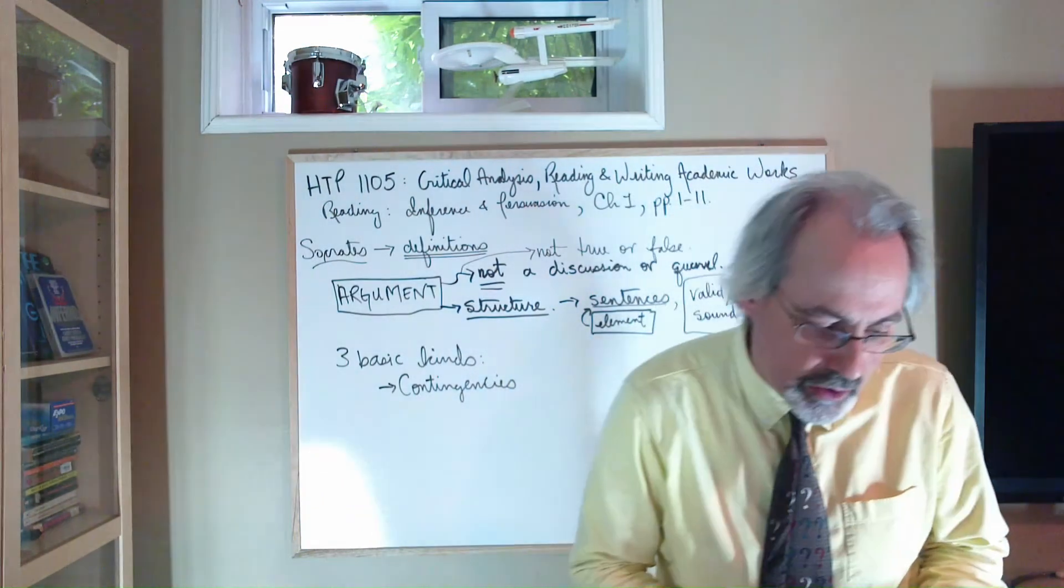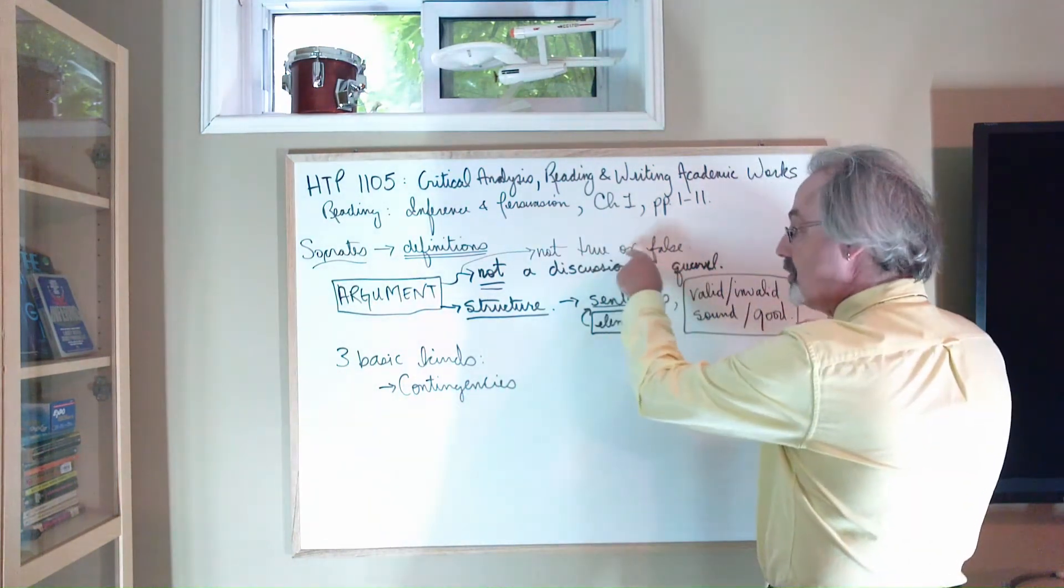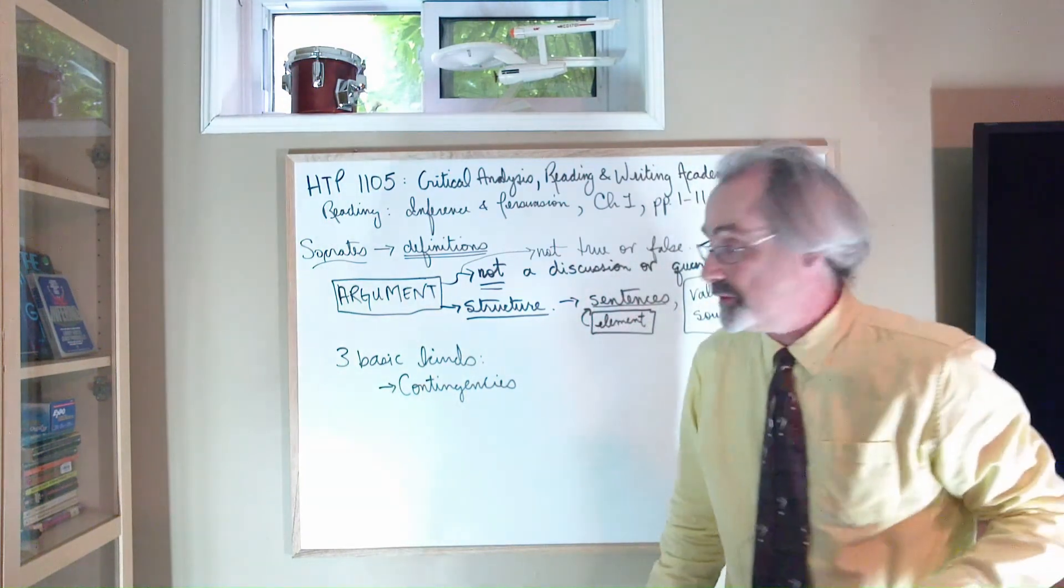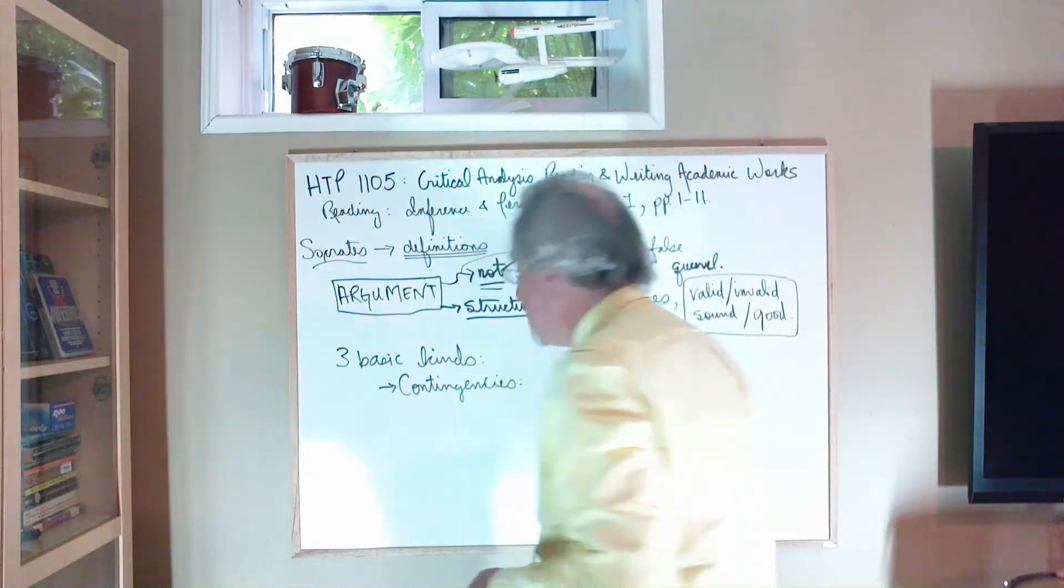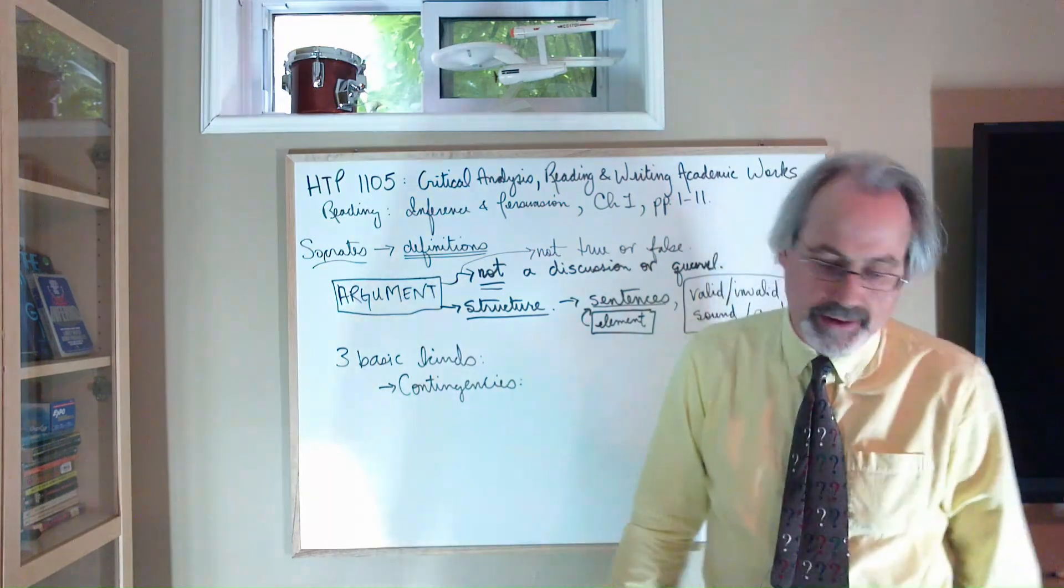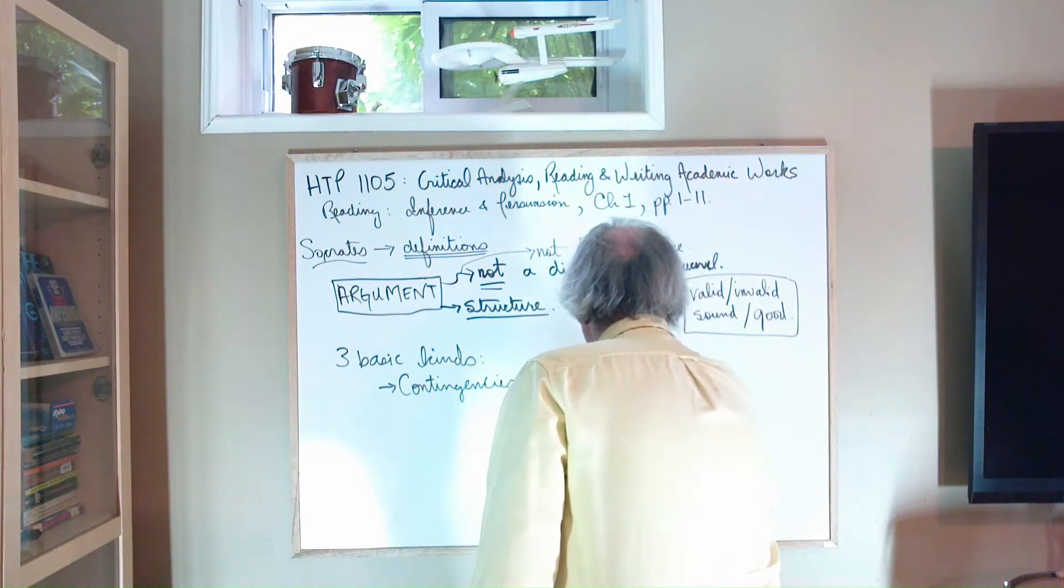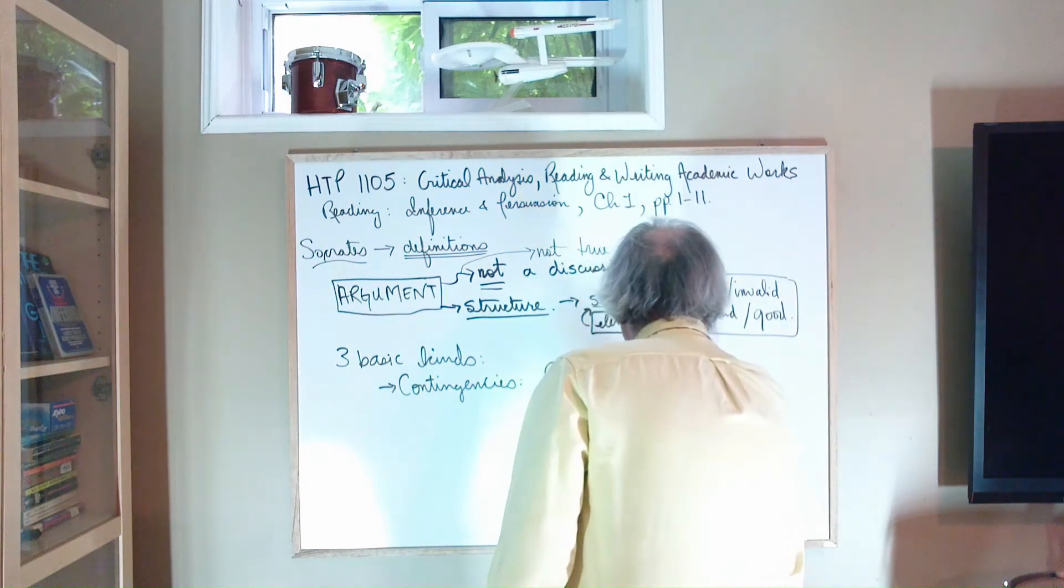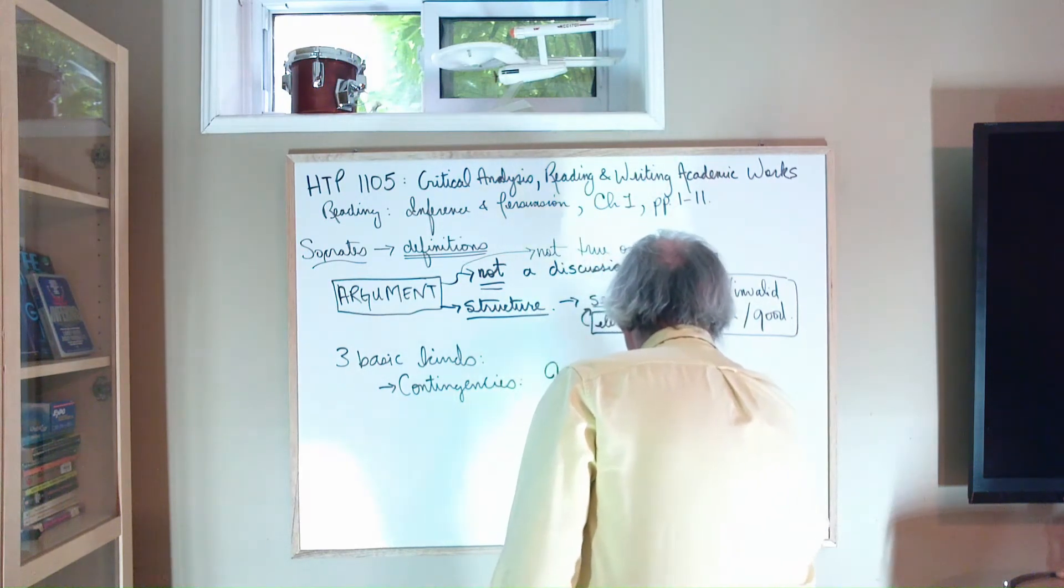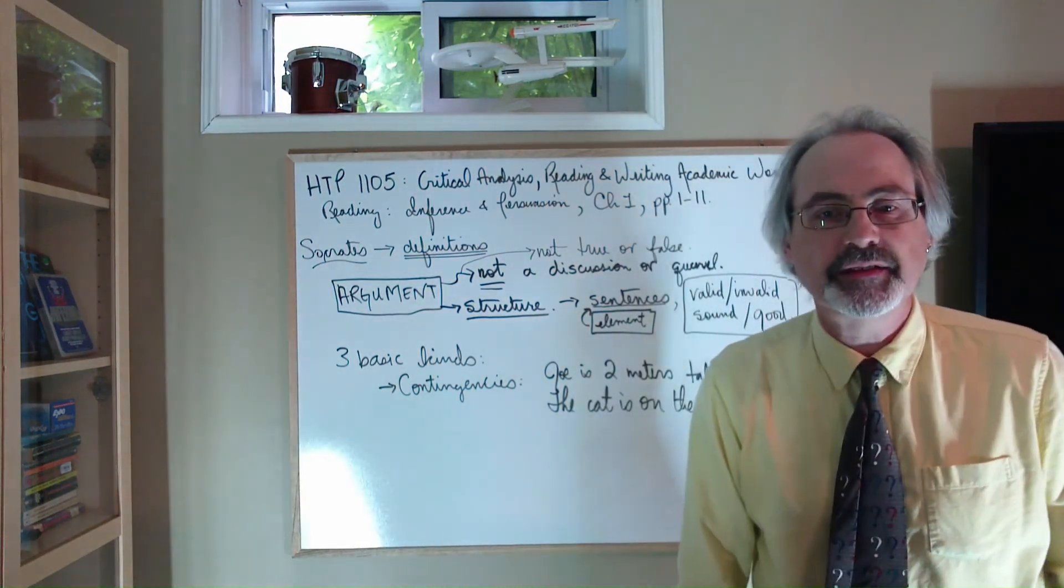And contingencies are sentences that can be true or false. Remember, arguments are not true and false. But the elements of arguments, sentences, these can be true or false. So contingencies, these are sentences that say something basically about the world. Simple one. Joe is two meters tall. The cat is on the mat. Very simple sentences like that.